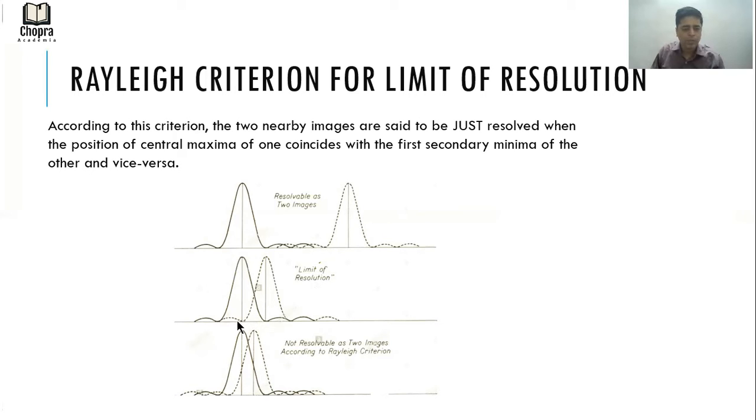At least you need this much separation between two images or wavelengths to be able to resolve those two images. If the distance is lesser than the limit of resolution, then the images cannot be resolved according to the Rayleigh criterion. This is a very important law and we will use this criterion to find the resolving power of a grating.